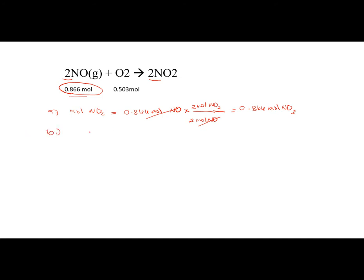Now using the mole of oxygen gas: moles of NO₂ is equal to 0.503 moles of O₂ times, from the balanced equation, in every 1 mole of oxygen gas we have 2 moles of NO₂ produced. Cancel out. So 0.503 times 2 gives us 1.006 moles of NO₂.